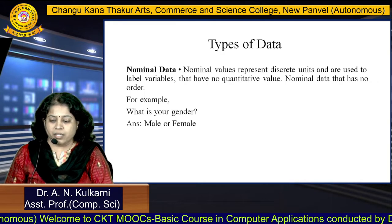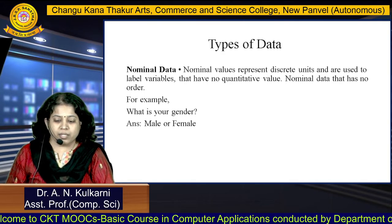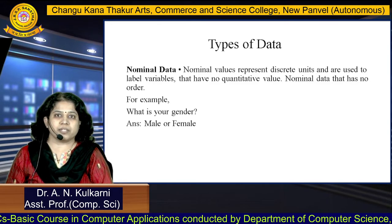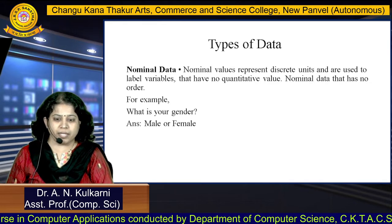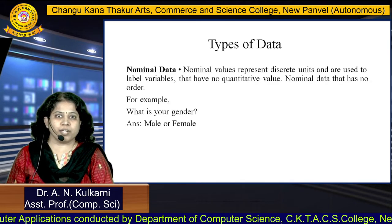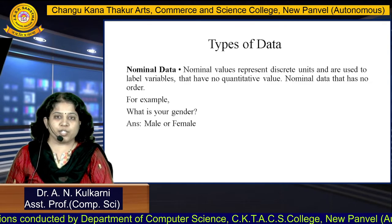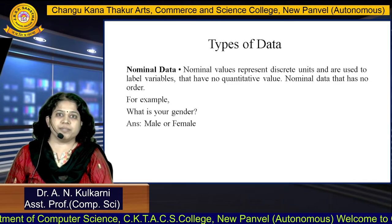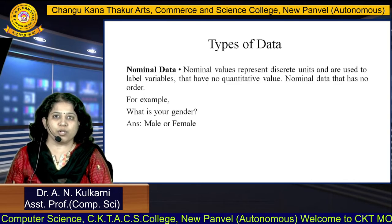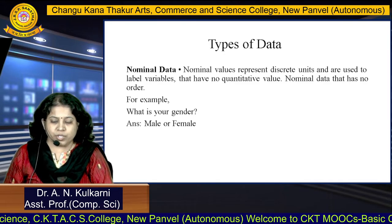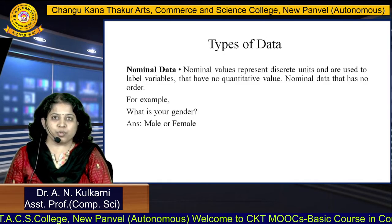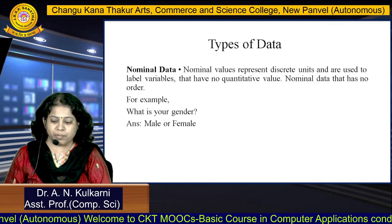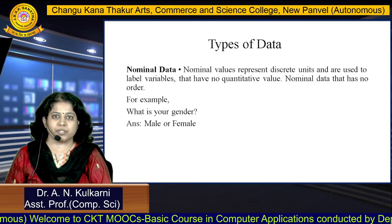Nominal data: nominal values represent discrete units and are used to label variables that have no quantitative value. Nominal data has no order and comes under qualitative data type. For example, the question 'What is your gender?' — the answer may be male or female. Here, male or female is used for labeling, and this is qualitative in nature.